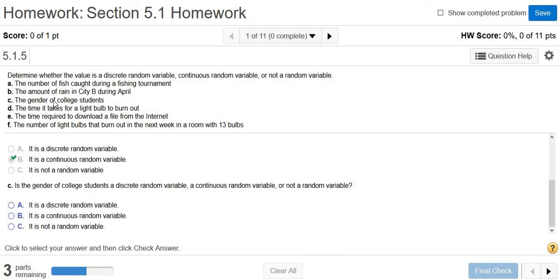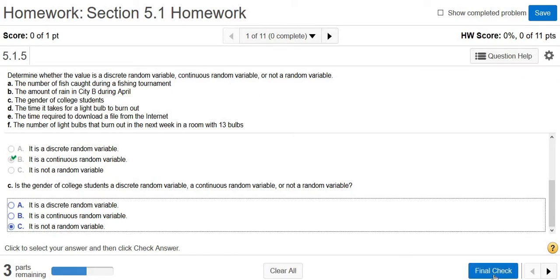The gender of college students, so male or female. So this is the category that is not a random variable because males and females, those aren't numbers. So it is not a random variable.